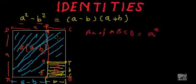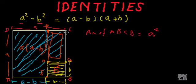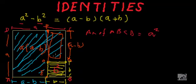And what will be the area of rectangle FCGO — where this point is G? This is also a rectangle. FCGO is a rectangle whose width is B and whose length is also A - b. So the area of this rectangle is B × (A - b).